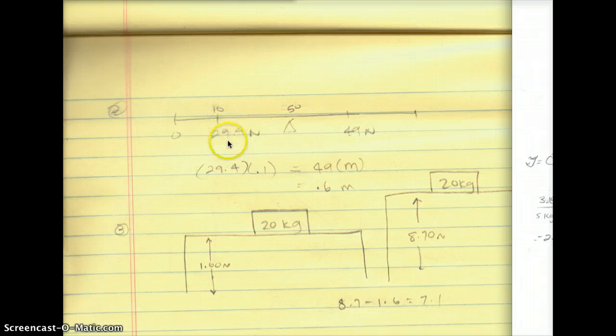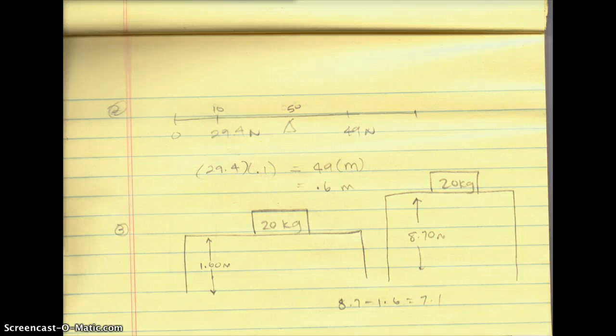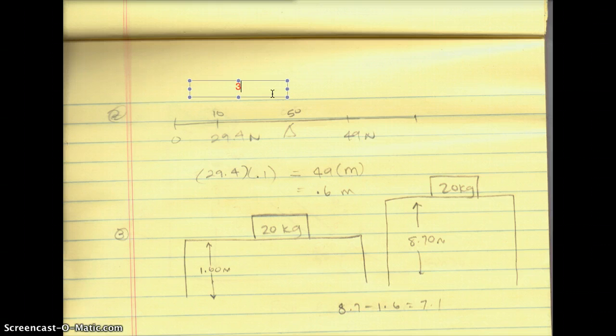And what I did is we have taken our 3 kg block, right, which is placed at your 10 cm mark. And I've converted it to newtons because you always need to keep it in standard units. And the formula we are going to be implementing will need this to be in newtons.